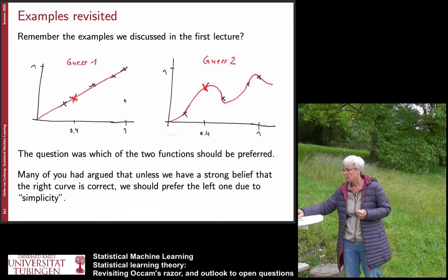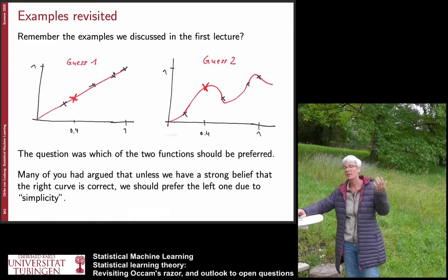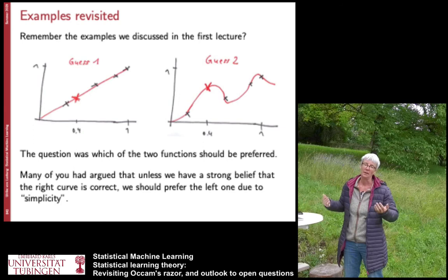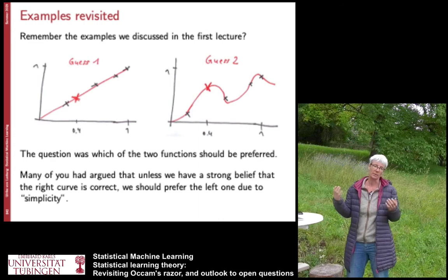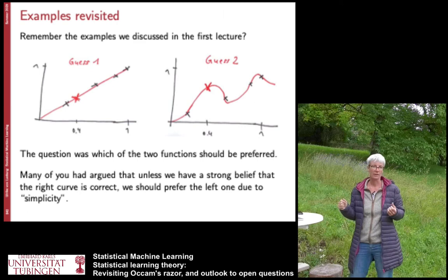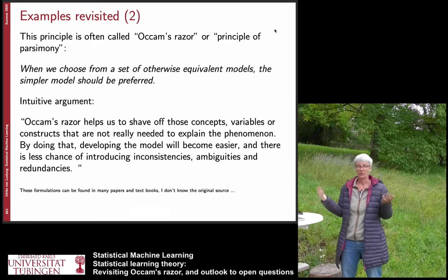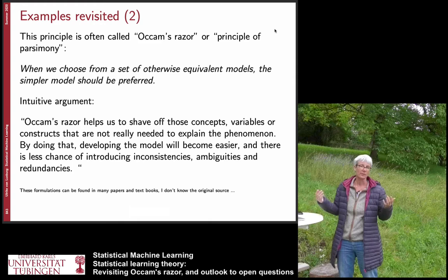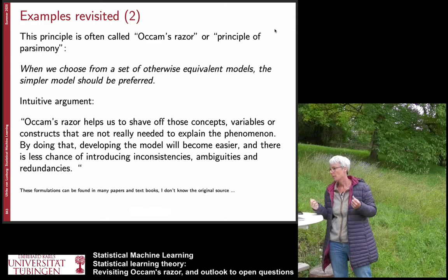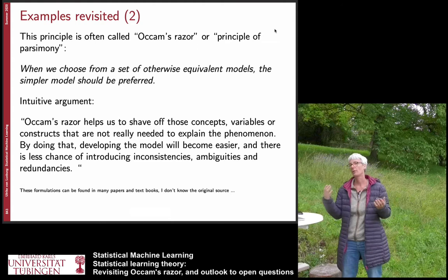In the first or second lecture we had these data points — the black ones — and two different ways to fit the data. This red line here was guess one and this red line is guess two. The question was which function should be preferred. The argument was: if I don't have additional prior knowledge, the first function might be better because the second guess has all these wiggles, and unless I have a good reason for those wiggles, why not use the linear function? That principle — looking for simple functions — is called Occam's razor, also the principle of parsimony. When you choose from a set of otherwise equivalent models, the simpler model should be preferred.